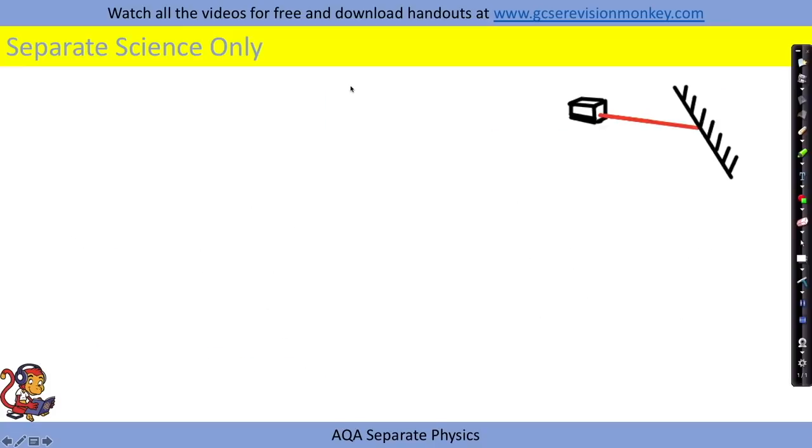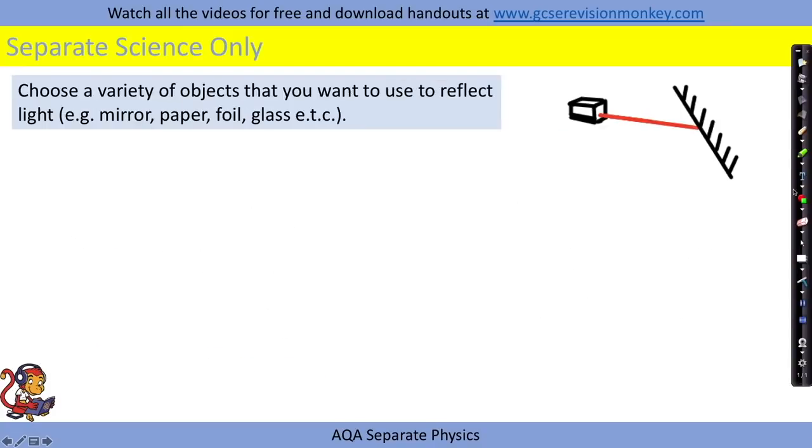So you may be asked to investigate how different surfaces reflect light. You would choose a variety of objects that you want to reflect the light. For example, a mirror, paper, foil and glass.